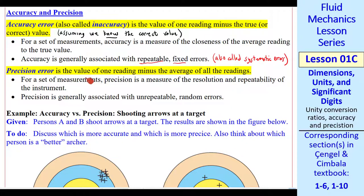Precision error is the value of one reading minus the average of all the readings. You don't have to know a correct value to calculate the precision. For a set of measurements, precision is a measure of the resolution and repeatability of the instrument. Precision is associated with unrepeatable random errors, rather than repeatable fixed errors or systematic errors.